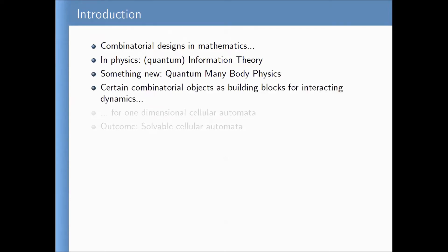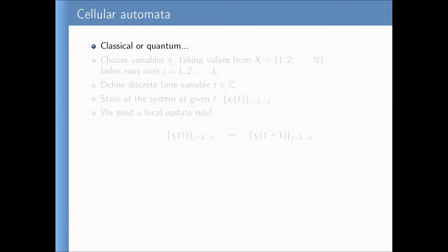It turns out we will use certain combinatorial objects as building blocks for interacting dynamics — in particular, for one-dimensional cellular automata. This means a cellular automaton defined in one space dimension, where combinatorial designs play the role of the fundamental equation of motion for these systems. The end result is that we can obtain solvable cellular automata, and I need to explain in what sense they are solvable.